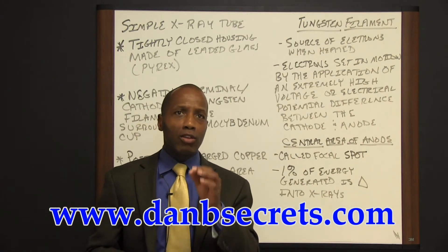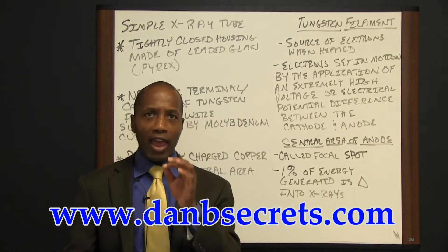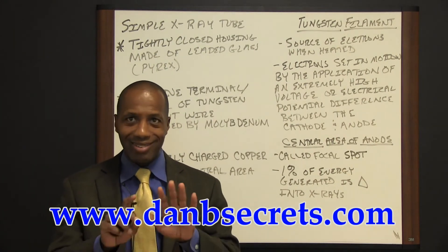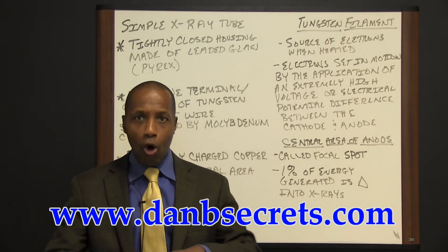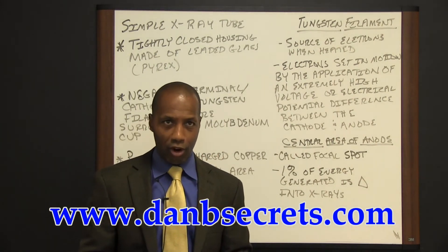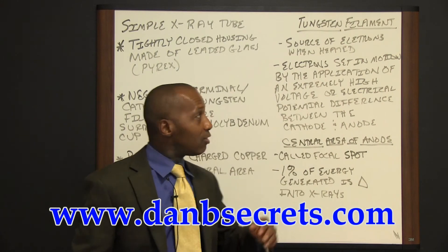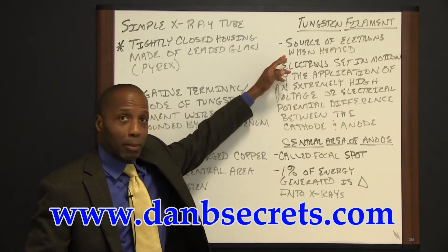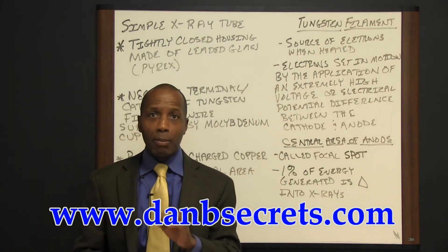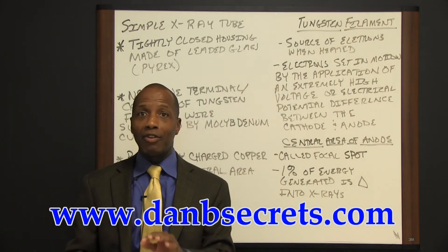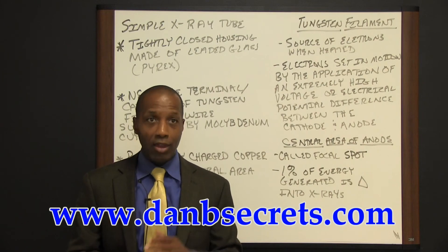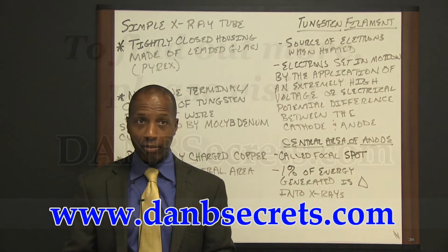The anode serves as a means of suddenly stopping or decelerating the electrons. Tungsten filaments are used because they have very high melting points and are not easily destroyed.